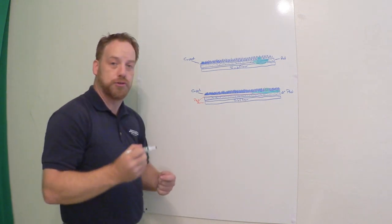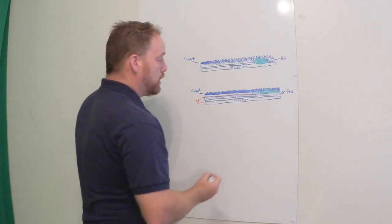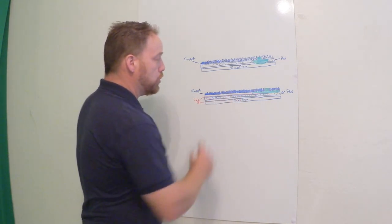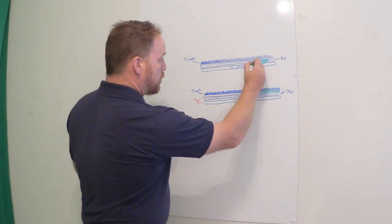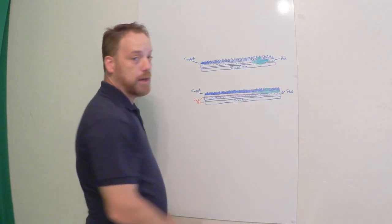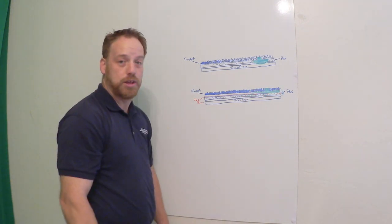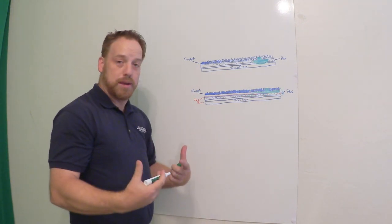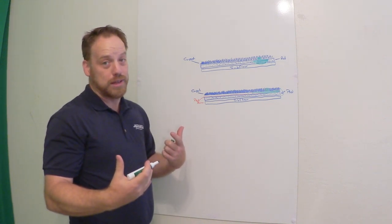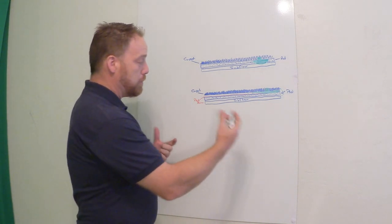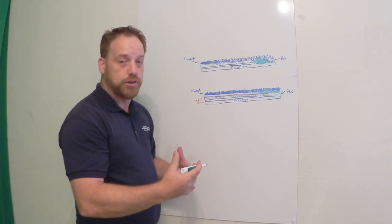Now this is a problem for two reasons. Number one, if I as the cleaner don't know you have this type of pad, I'm going to treat an area this big. But I need to be treating an area this big because that's where the urine went. So if I don't know what I'm dealing with, and there's no way for me to know unless the customer tells me, I'm not going to treat enough area to get all the urine out.